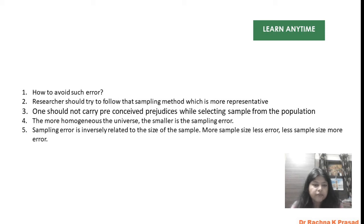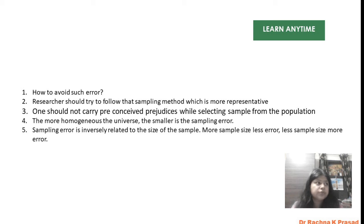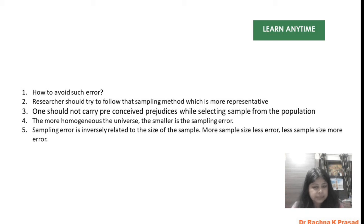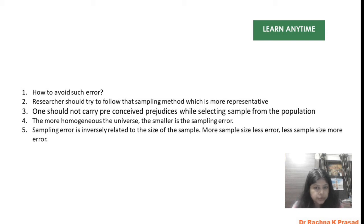The last point is that sampling error is inversely related to the size of the sample. If your sample size is larger — for example, you have taken 1,000 samples out of a population of 4,000 — that is a larger sample and the error will be less. If your sample size is smaller, then the error will be more. So more sample size means less error, and less sample size means more error.